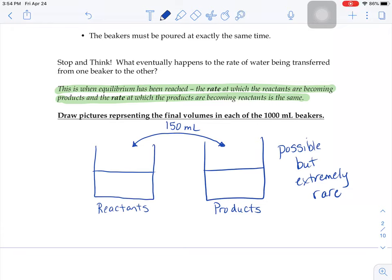Now that you've seen the dueling beakers demo, you should have seen in the first trial there that after the water got passed back and forth for a while, you had equal amounts of water in the reactants beaker and products beaker.